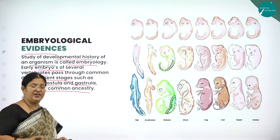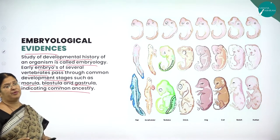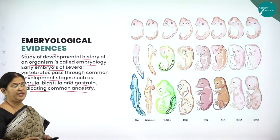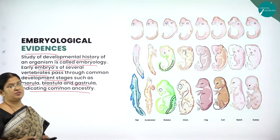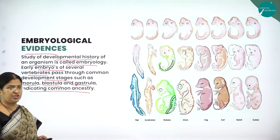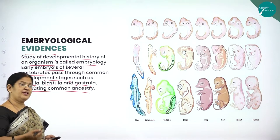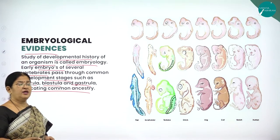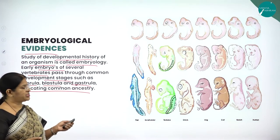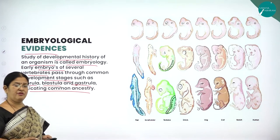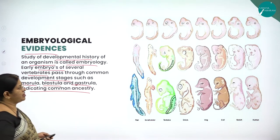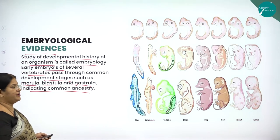Evidences are very discrete and very important to prove the process of evolution. Many direct and indirect evidences are given to explain the process of evolution, and one such evidence is the embryological evidence.